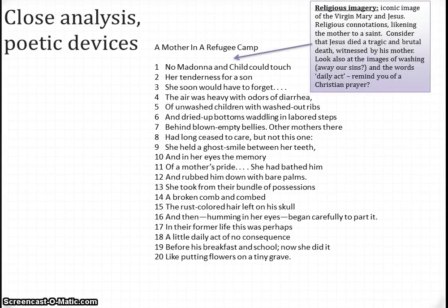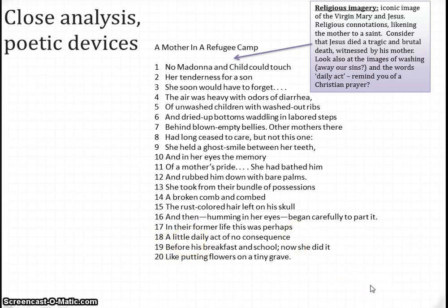We have a lot of religious imagery in the poem. Looking at the opening line, this iconic image of the Virgin Mary and Jesus gives us religious connotations likening the mother to a saint. We have to consider that Jesus died a tragic and brutal death witnessed by his mother. Are we being prepared for the mother soon witnessing the untimely, tragic death of her child? We also see later on other images that could be religious — washing, think about the traditional image of washing away our sins, and the phrase 'daily act' further down in the poem. Does this remind us of the Lord's Prayer?